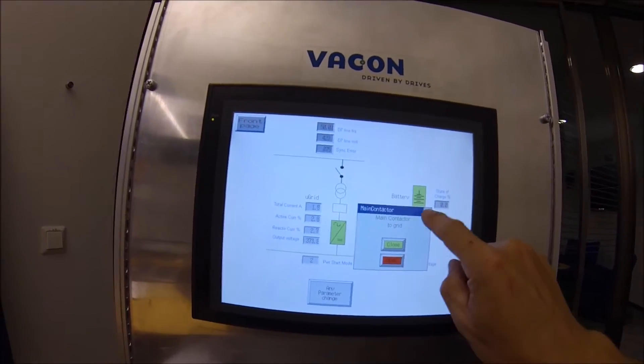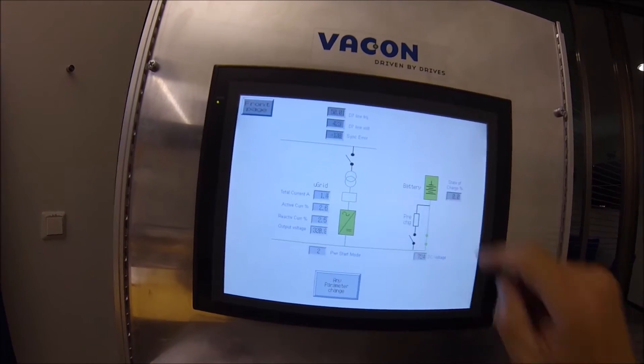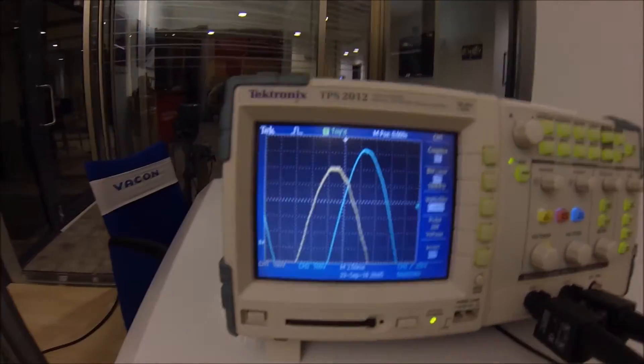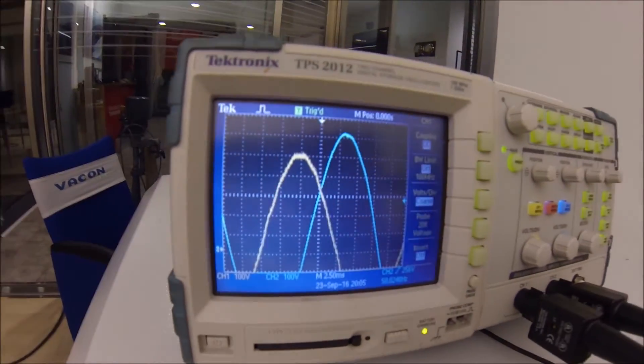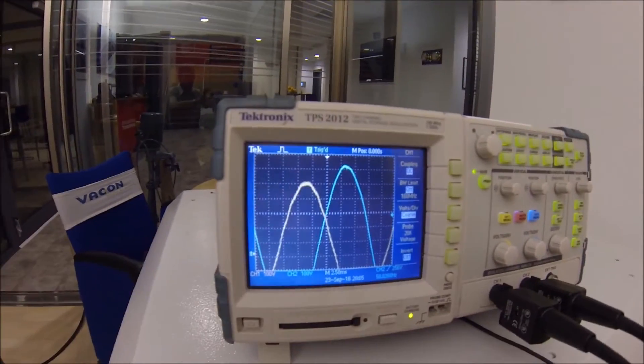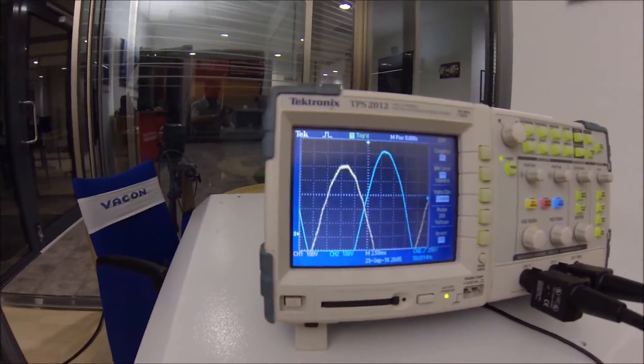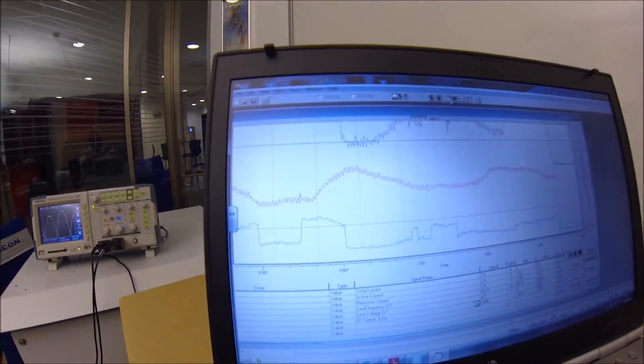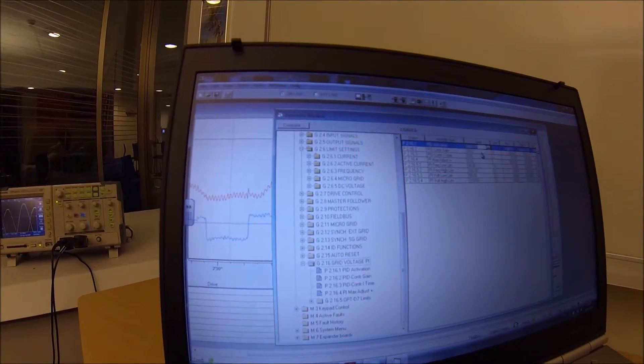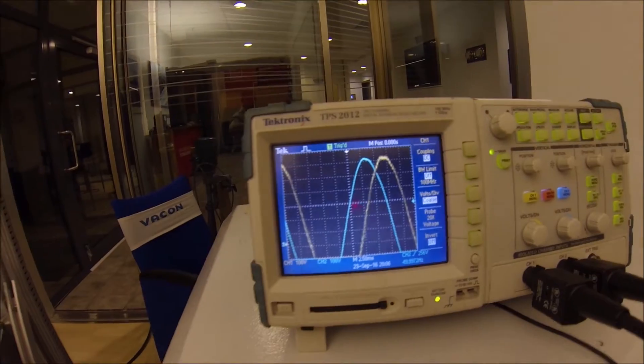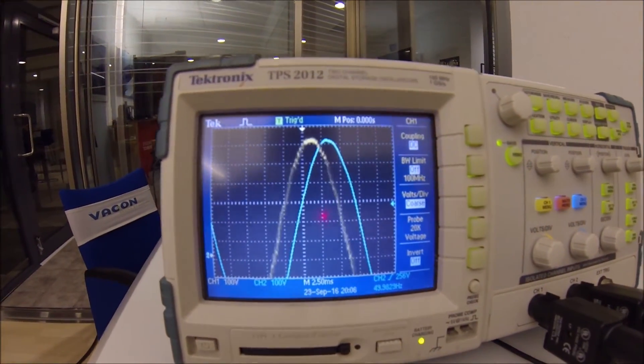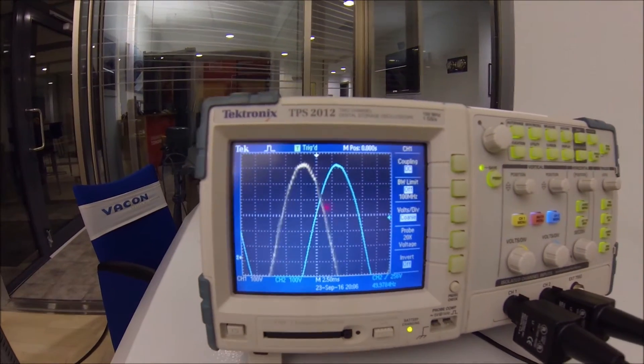If I'm opening this now we are not anymore synchronous as we can see. We are missing the voltage, we are missing the frequency, we are missing everything. How do we get it to synchronize? First of all, using the PID regulator when we are not connected to the grid is not a good idea. So get the PID regulator off and now we see that the frequency is drifting.